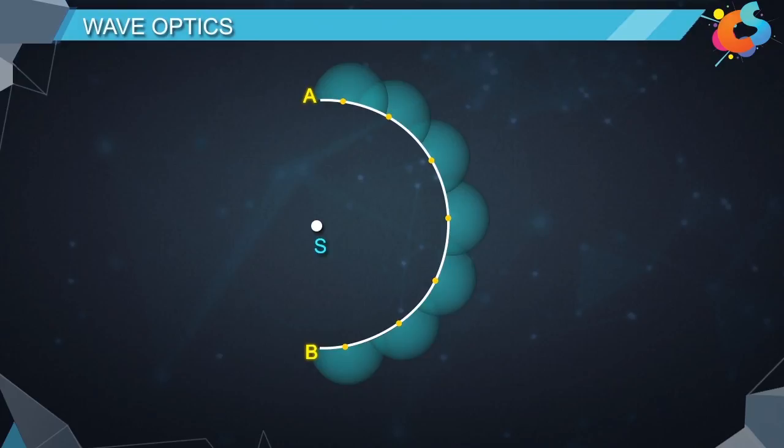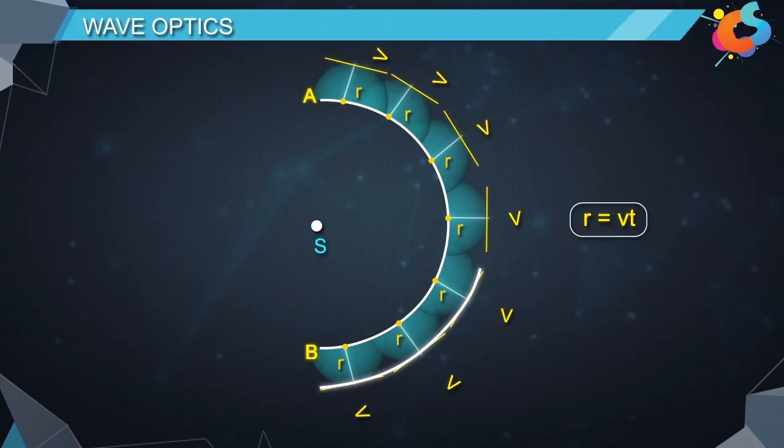If we assume that the medium is isotropic, then the velocity of wavelets will be the same in all directions. The radius of secondary wavelets is given by R equals V times T. Now, if we draw a tangent to all these waves, we will get the position of the new wave front A dash B dash.